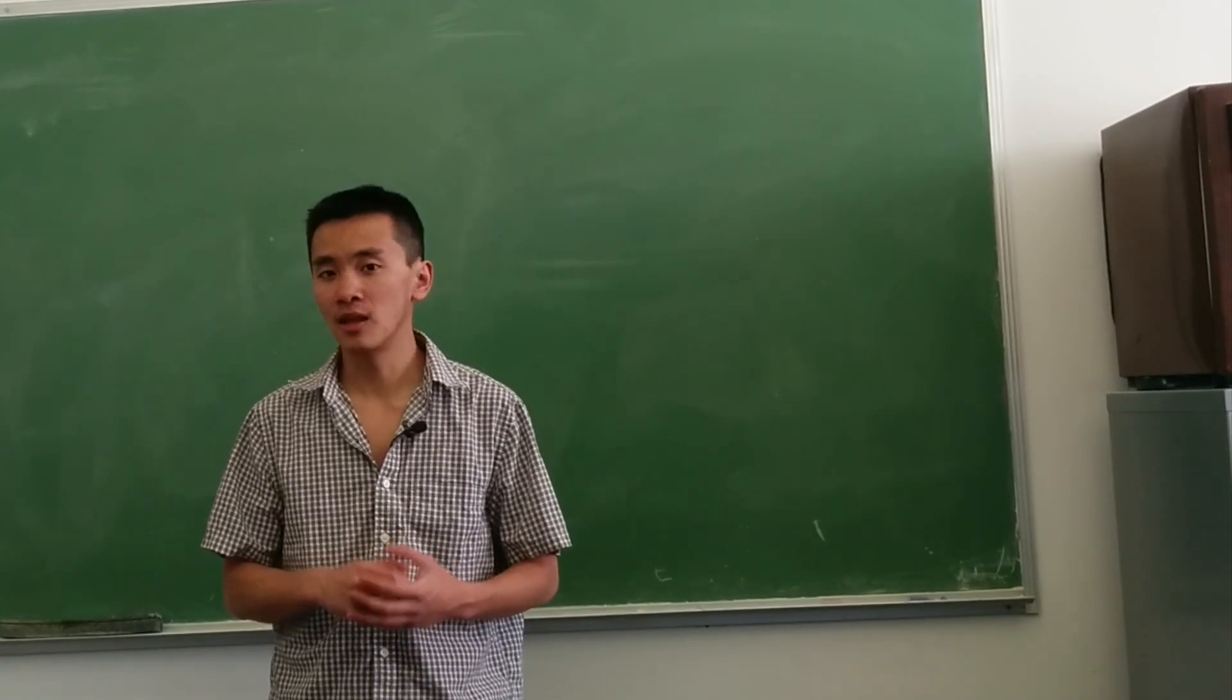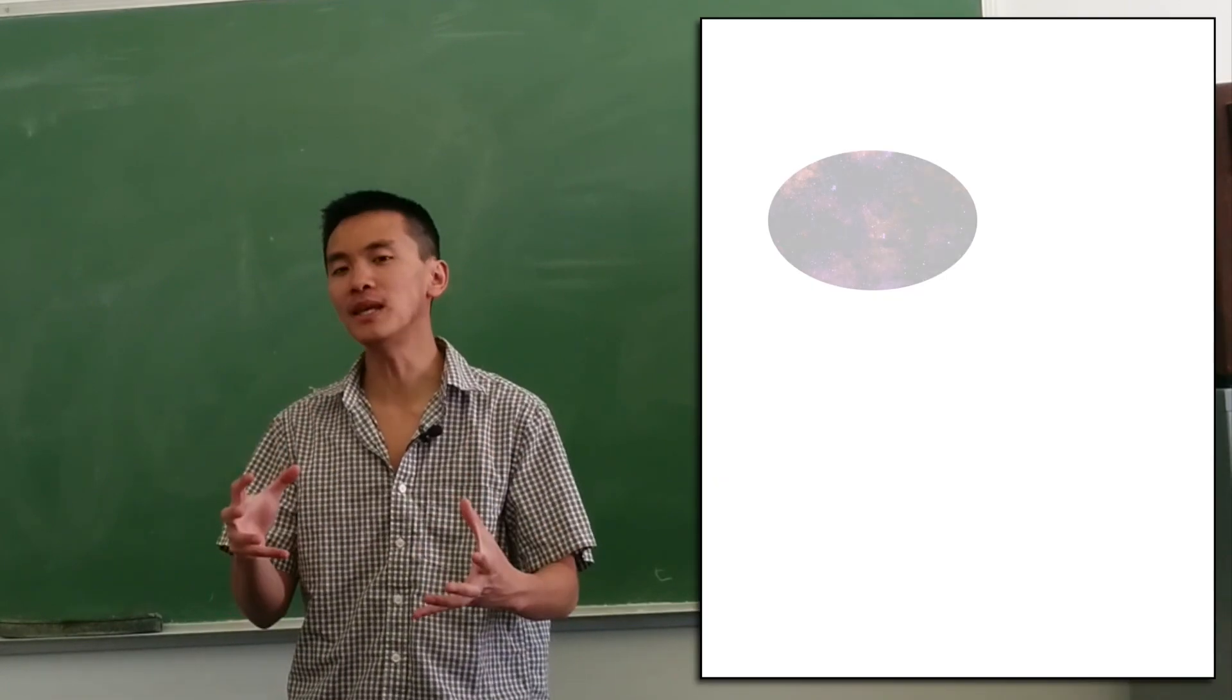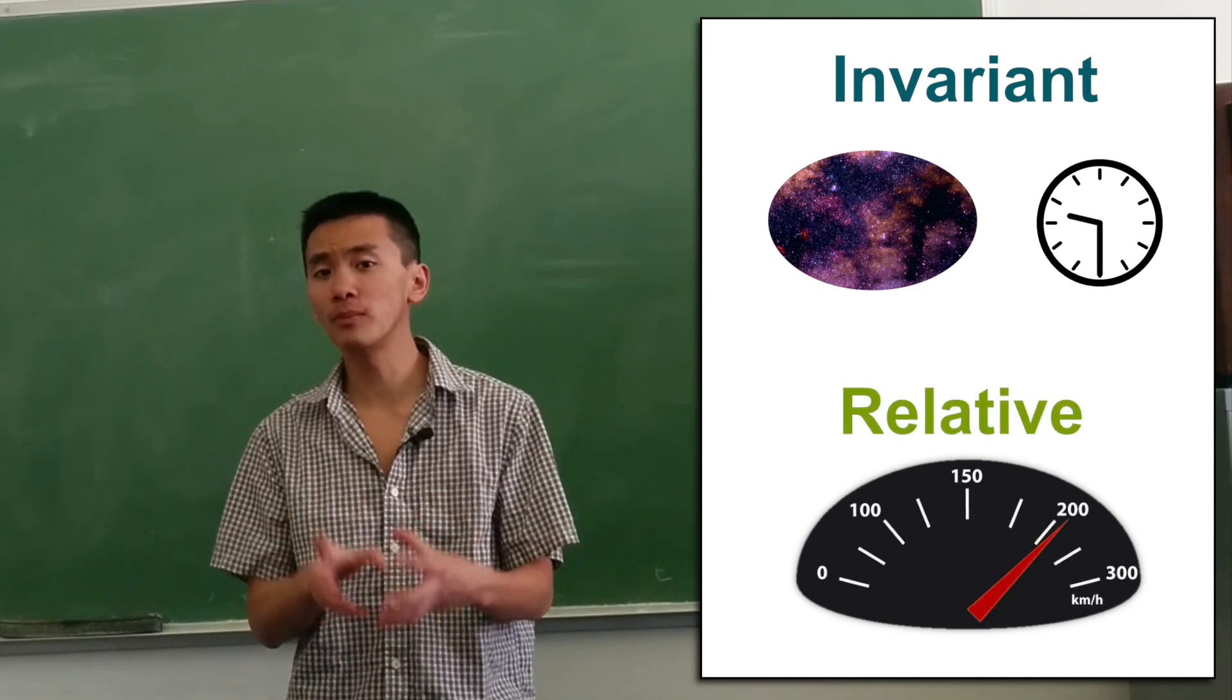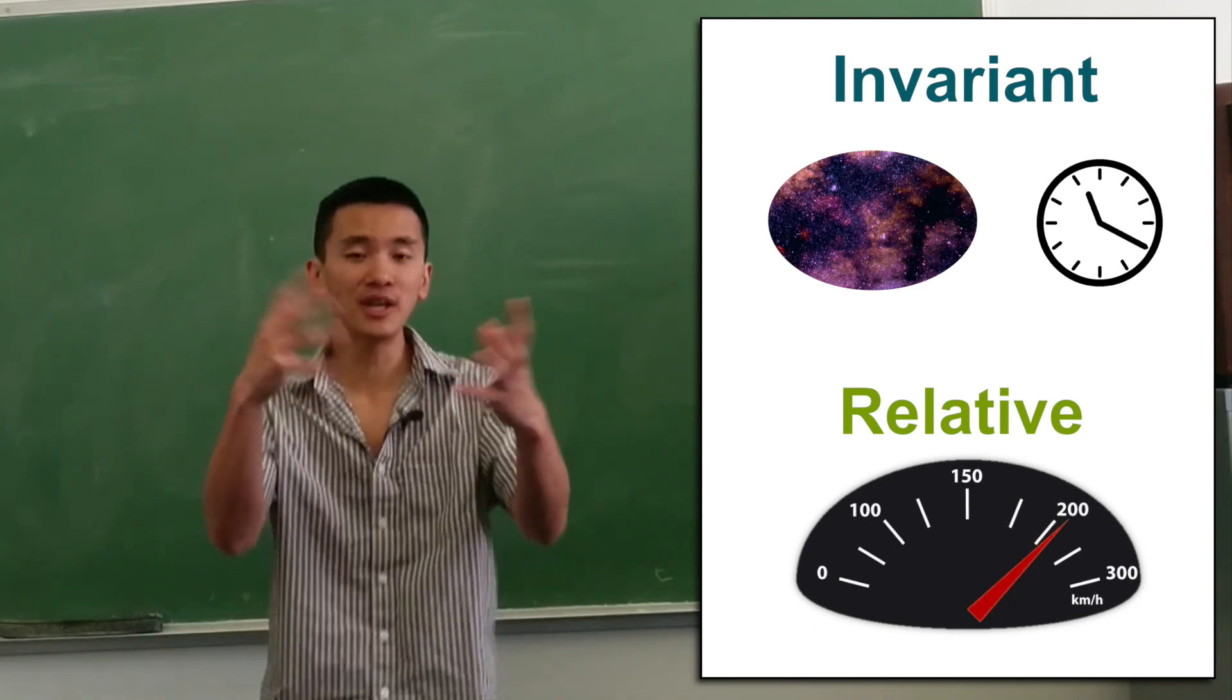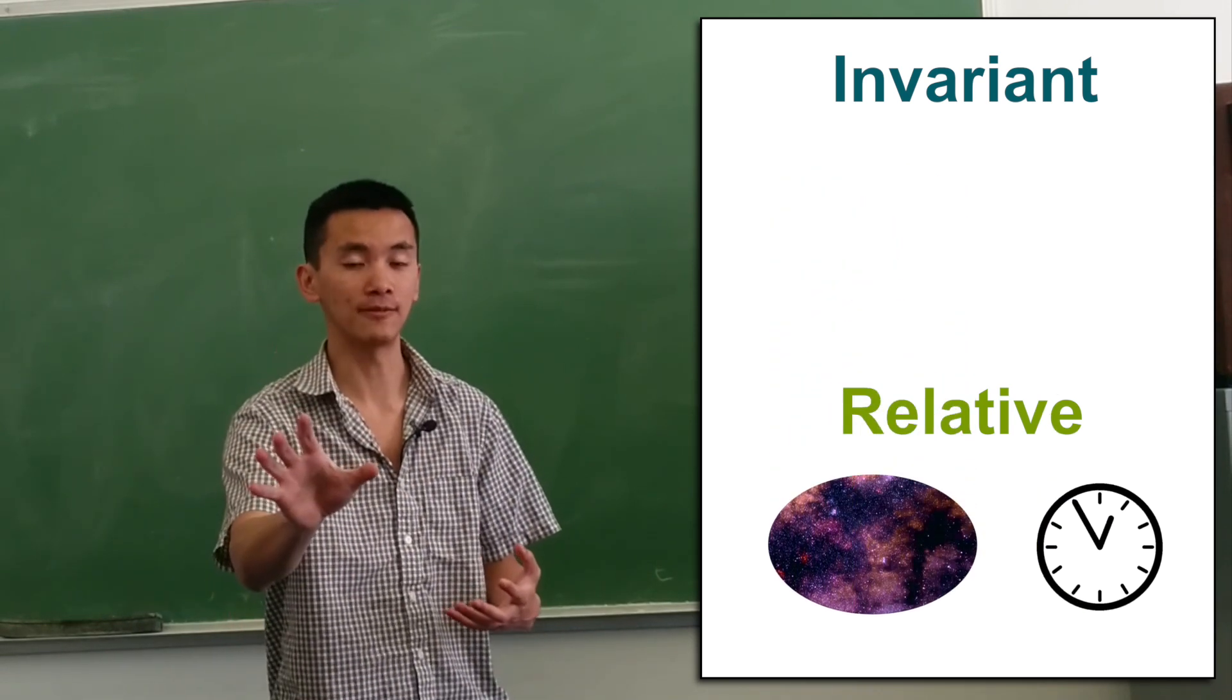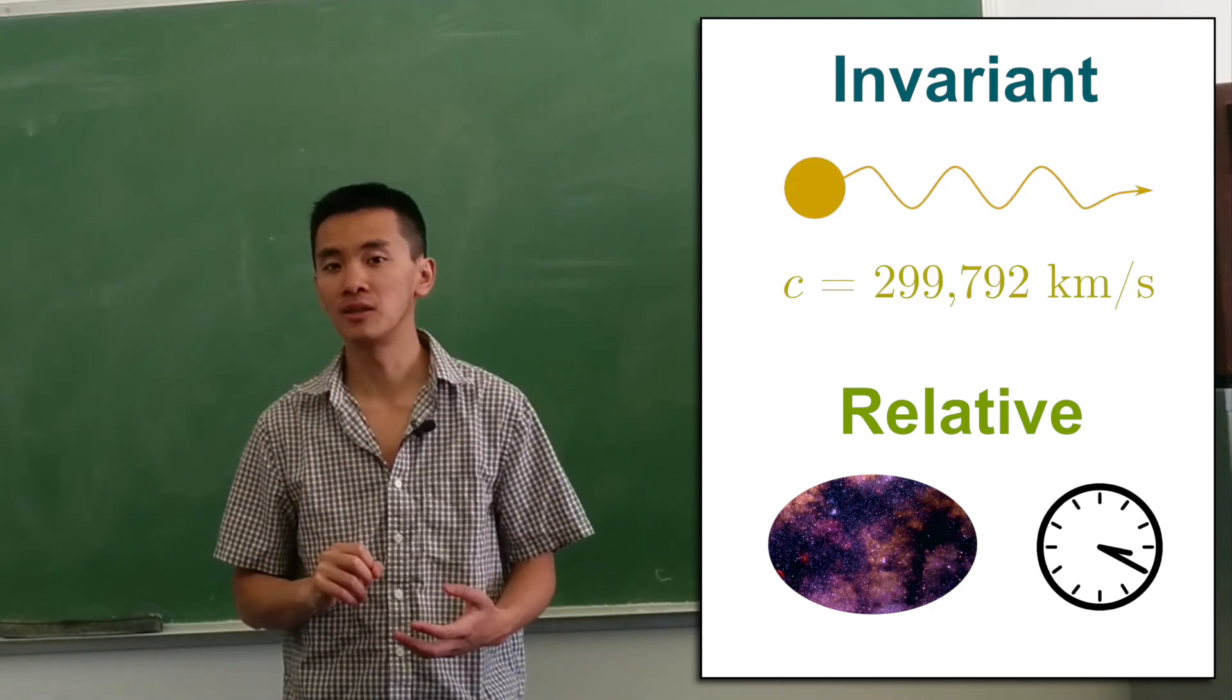So what's invariant in Einstein's theory of relativity? Well, in short, Newtonian mechanics, which was believed to be the truth back in Einstein's time, considered that space and time were absolute, while speeds are all relative. And by building upon mathematical theories as well as experimental results, Einstein had the great idea of inverting it. He considered that space and time were no longer absolute, they were relative, while one speed was absolute, and that is the speed of light.